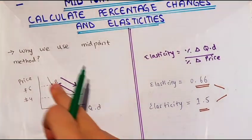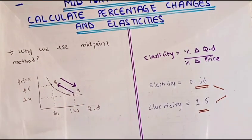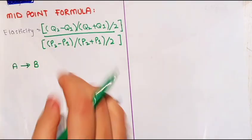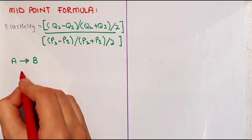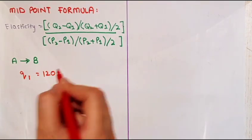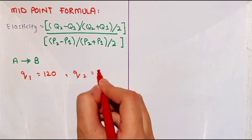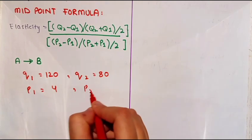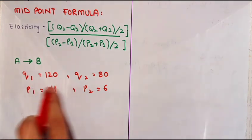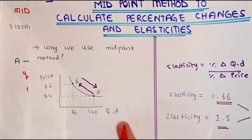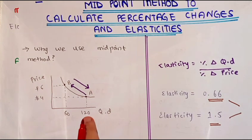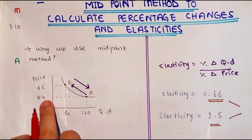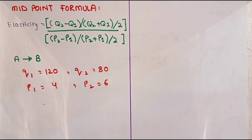Now we apply this formula on the same graph, just to confirm that if we follow both paths, A to B or B to A, we get the same answer. According to our values: Q1 is 120, Q2 is 80, P1 is 4, P2 is 6. Now when we apply this in the formula, the calculation is very easy.